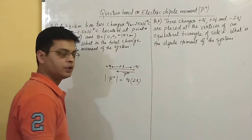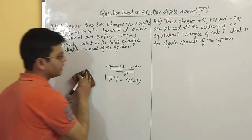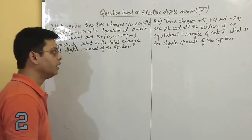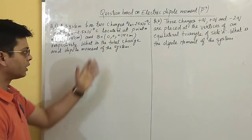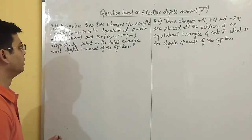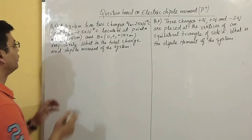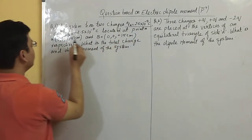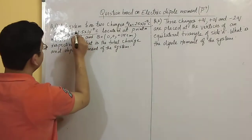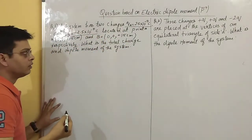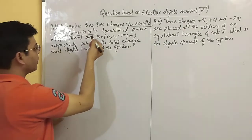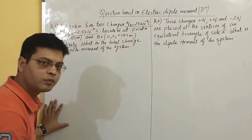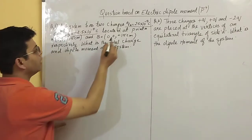Let's discuss the questions. First, we will discuss a numerical problem related to a dipole. The system has two charges: one positive charge of 2.5 into 10 to the power minus 7 and one negative charge of the same magnitude. This is a dipole problem because a dipole is a combination of two equal and opposite charges separated by a small finite distance.